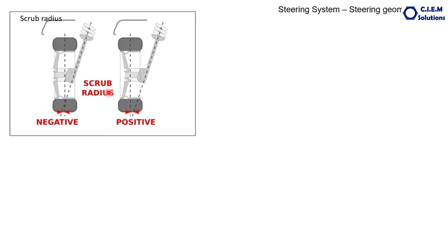When we view from the front side of the vehicle, imagine the straight line from the ground — that is the central line of the tyre — and this is the kingpin inclination line, or kingpin axis, or steering axis. If these two lines meet above the ground level, the distance between them at the ground level is called the negative scrub radius. If these two lines meet below the ground level, the distance at the ground level is called the positive scrub radius.